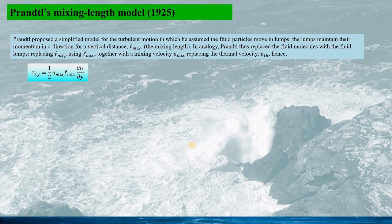Prandtl proposed a simplified model for the turbulence motion, in which he assumed the fluid particles moves in lumps, the fluid units. The lumps maintain their momentum in x-direction for a vertical distance, L_mix, the mixing length.